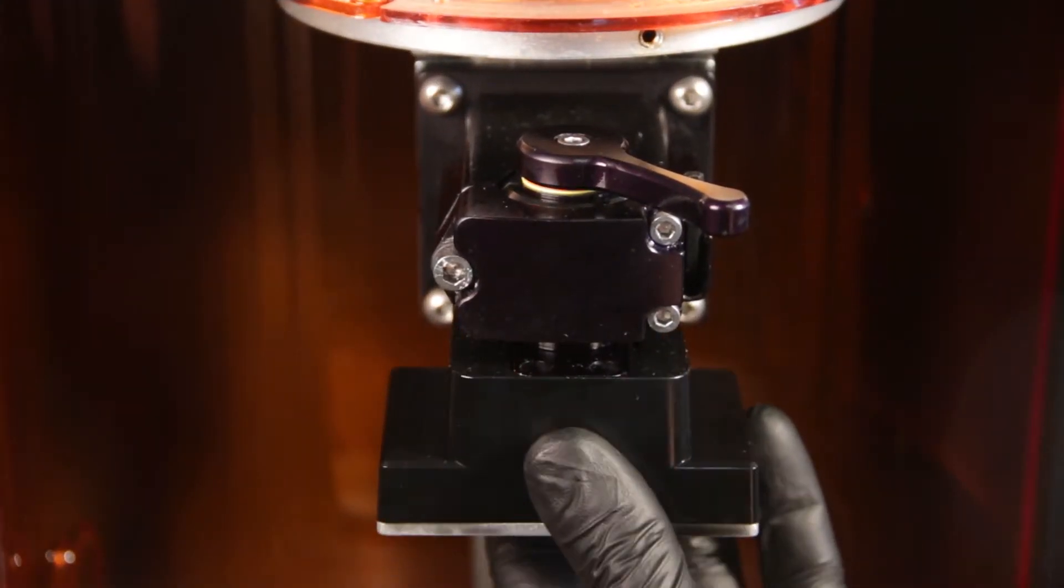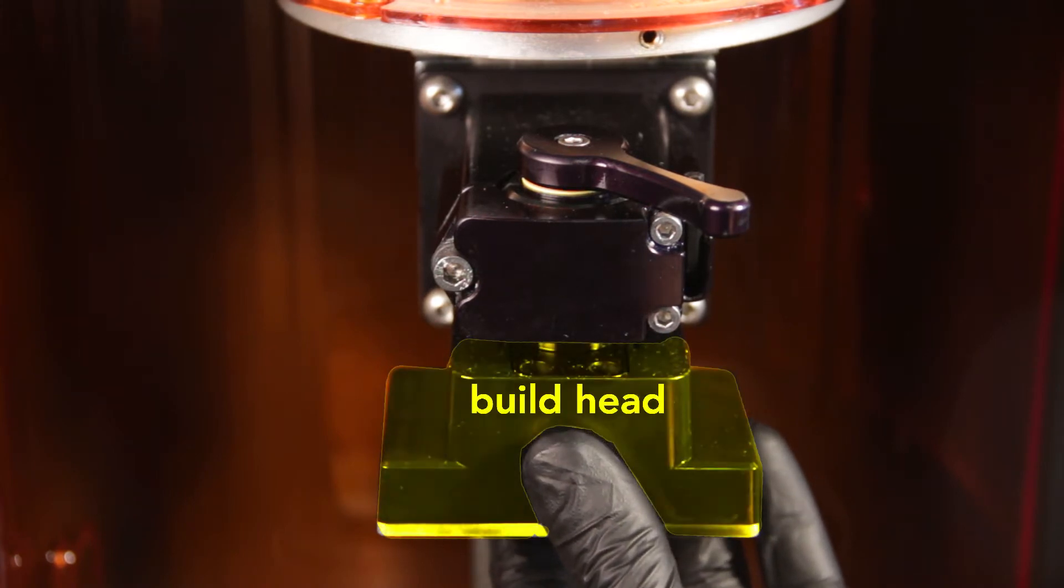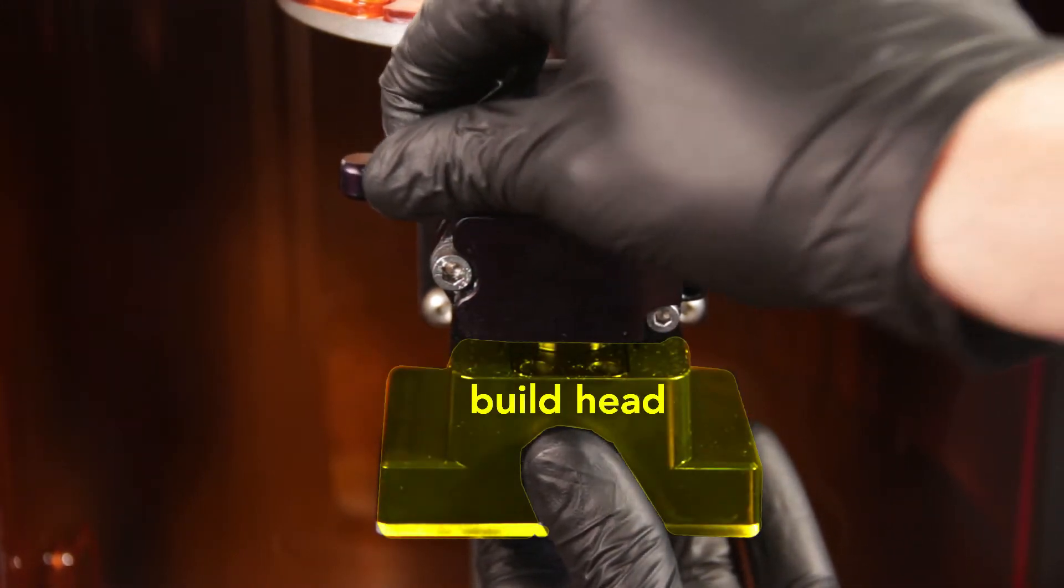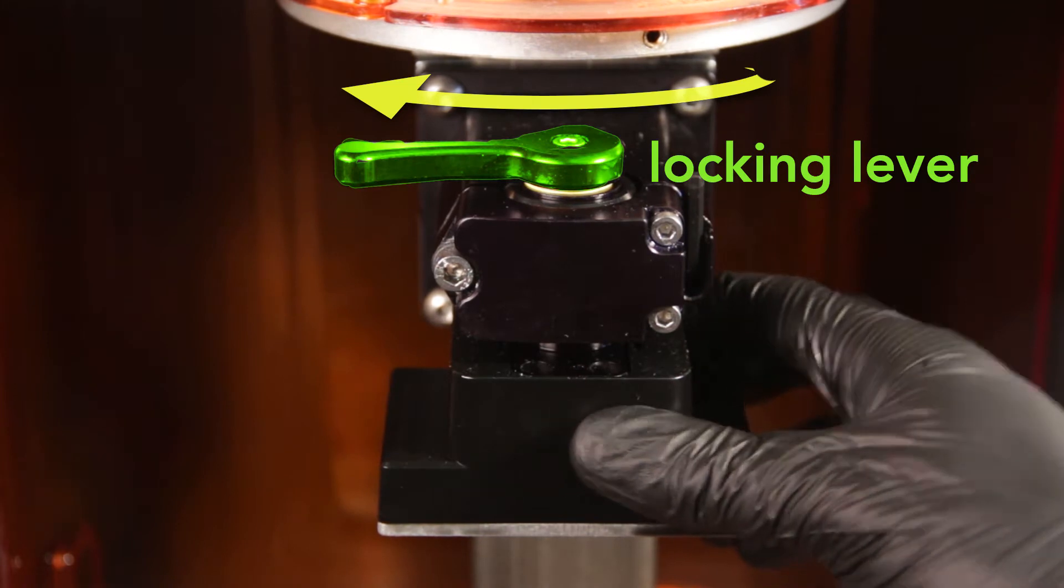First, install the build head which magnetically snaps into place. Flip the locking lever clockwise to the left to secure the build head.